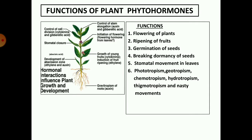Let us now study the functions of plant phytohormones. Together with cell division and cell elongation, they carry out a number of other functions. For example, flowering of plants, ripening of fruits, germination of seeds, and breaking dormancy in seeds — every seed after its formation goes into a period of rest which we call dormancy. They help in breaking dormancy. Stomatal movement in leaves, tropism — that is phototropism, geotropism, chemotropism, hydrotropism, thigmotropism — and they are also responsible for nastic movements.